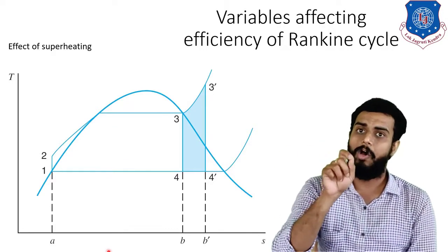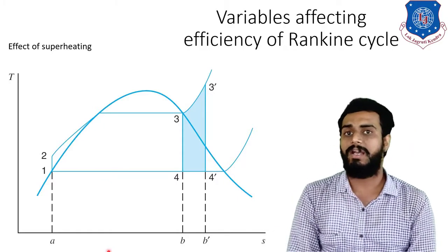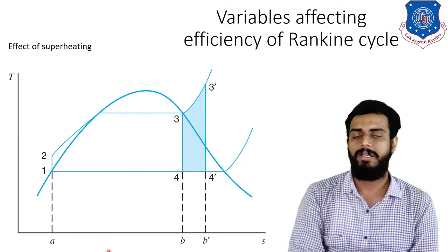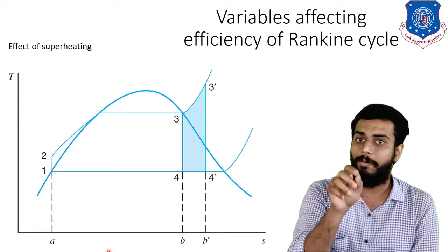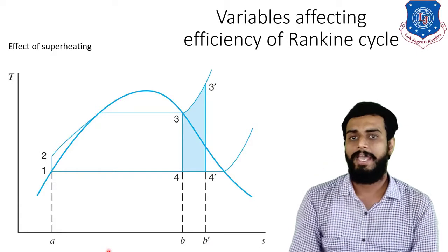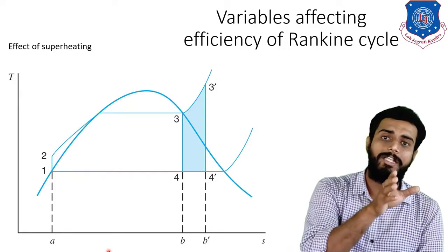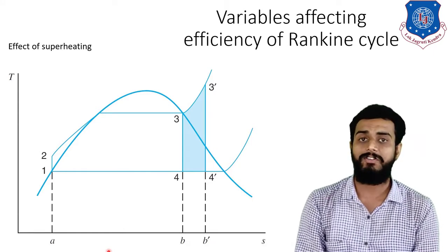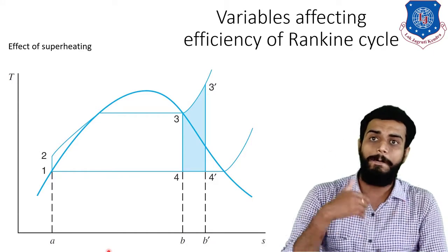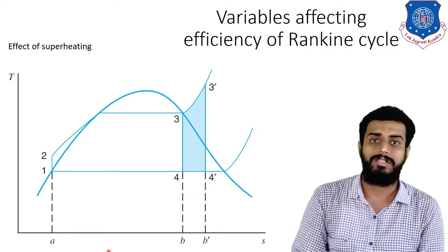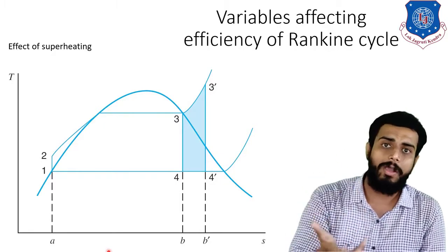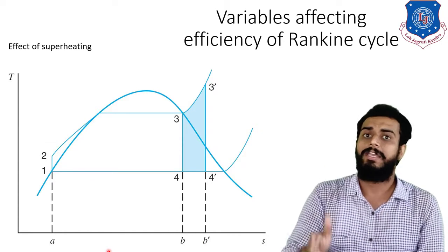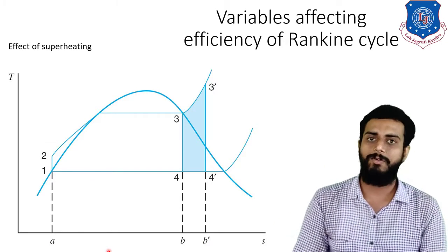Another advantage of superheating steam: observe points 4 and 4'. Corresponding to point 4, the dryness fraction might be 0.85, but corresponding to 4', the dryness fraction might be 0.95. That is advantageous because a higher dryness fraction means less moisture in the steam, giving longer life to the turbine blades. So superheating provides both increased efficiency and improved turbine longevity.